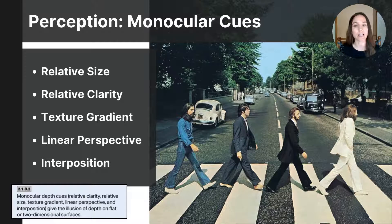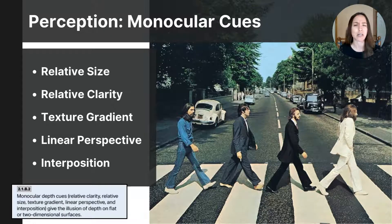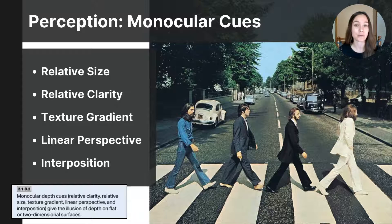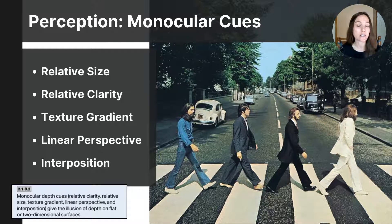Relative clarity is a cue that relies on the difference in sharpness between objects at varying distances. Closer objects appear sharper and more detailed, while those farther away look hazier and more blurry. In the photograph, you can clearly see Paul McCartney walking barefoot — you can even see the wrinkles in his suit. However, as you look farther back, things become less detailed. You can see the white Volkswagen has a license plate, but you can't make out the number. As you look at cars farther in the distance, they become less and less clear — this is relative clarity.